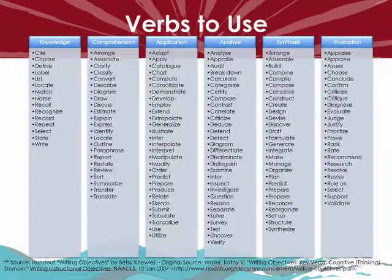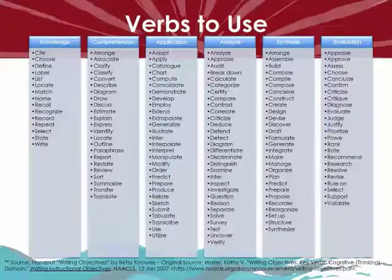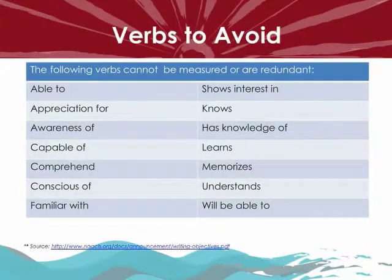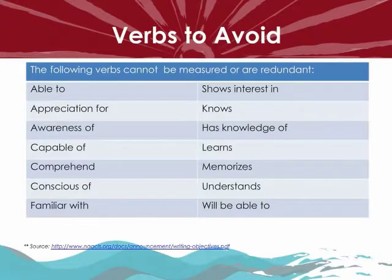Here is a list of verbs that can be used for each level of Bloom's Taxonomy — you can consult this list when writing measurable objectives. Here is also a list of verbs to avoid when writing measurable objectives, because they cannot be measured and are sometimes redundant.